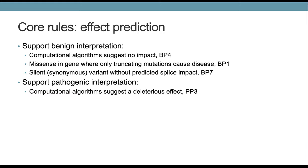The next set of rules mostly have to do with conservation and effect predictions — computational scores that assess the likely impact of a variant. These can go in either direction. If the computational algorithms suggest there won't be an impact, that could be BP4, supporting-level benign evidence. If it's a missense variant in genes where only truncating mutations are known to cause disease, that would also support a benign classification, BP1. Silent or synonymous variants not predicted to have a splice impact would also be supporting benign evidence, BP7.